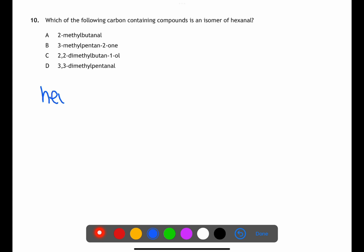In question ten we're looking for an isomer of hexanol. Let's start by drawing the structure of hexanol. Hexanol has six singly bonded carbons and has a carbonyl group on carbon number one.